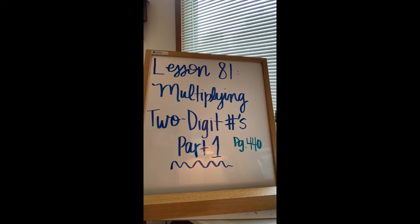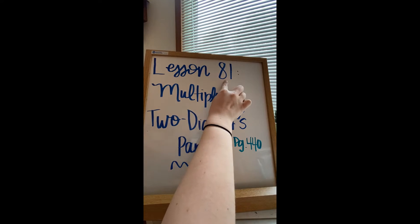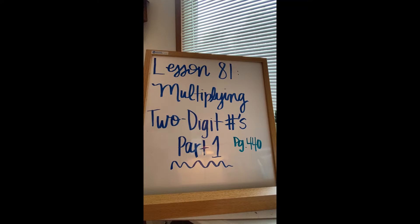Good morning, third grade math friends. Happy Monday to you. Today we are going to skip forward to lesson 81. Yes, lesson 81. Please make sure that you are working on the correct lesson today. We are going to learn how to multiply two-digit numbers, and this is only part one, and you'll see what specifically we're going to do when we multiply with a two-digit number. I'm going to be starting on page 440.